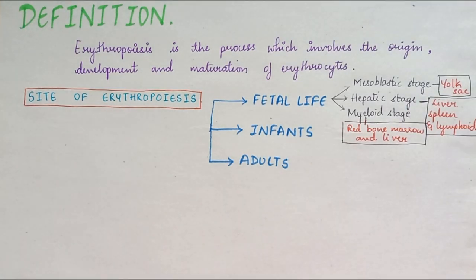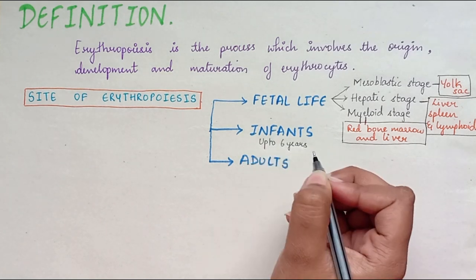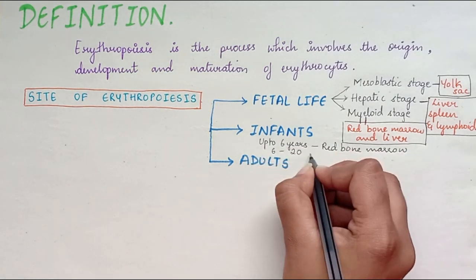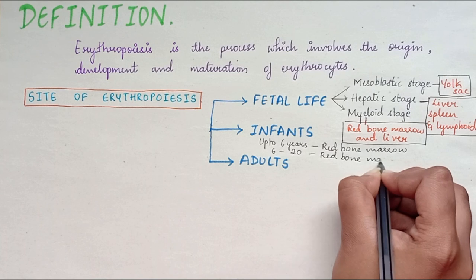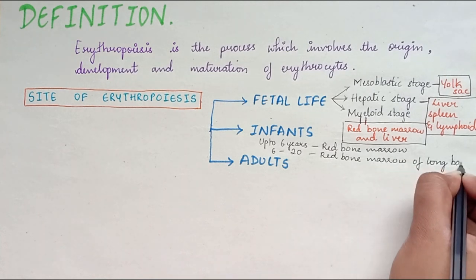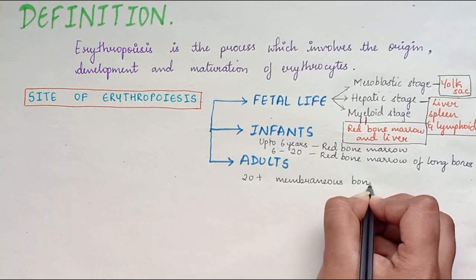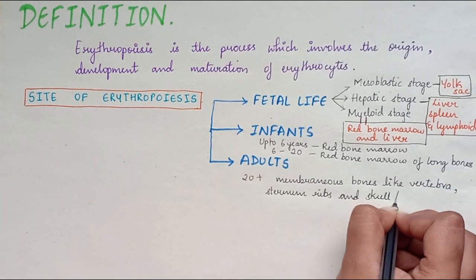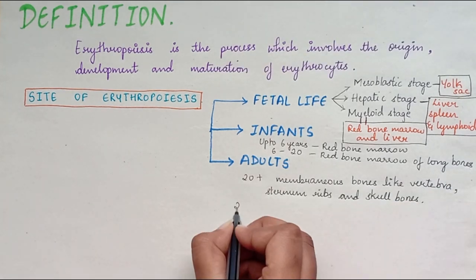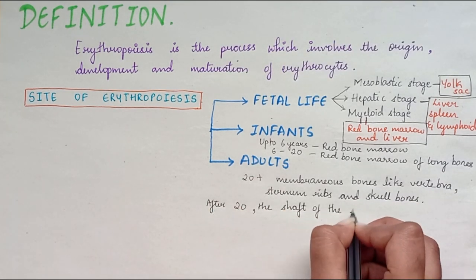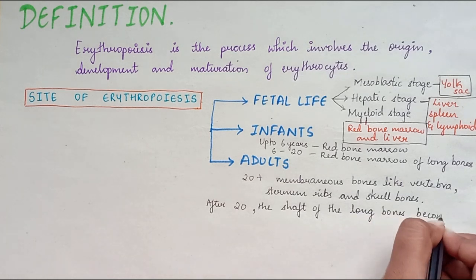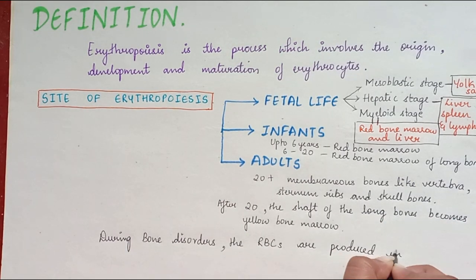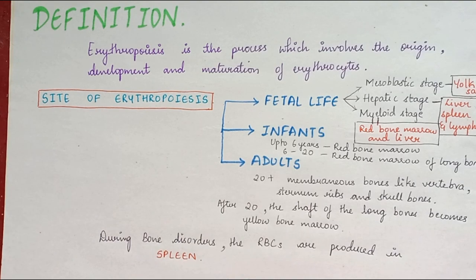In infants, up to the age of 6 years, RBCs are produced from red bone marrow of all bones, and from age 6 to 20 from red bone marrow of long bones. After age 20, it is from membranous bones like vertebra, sternum, ribs and skull bones. After 20, the shaft of the long bones becomes yellow bone marrow. During bone disorders, the RBCs are produced in the spleen.